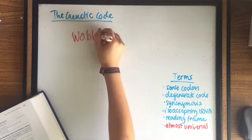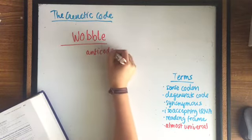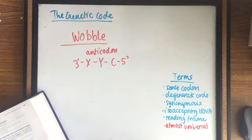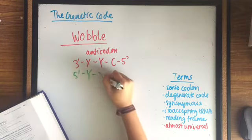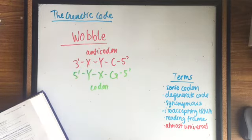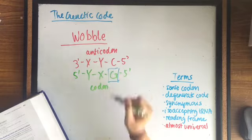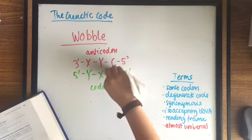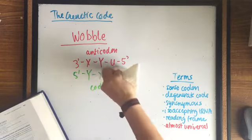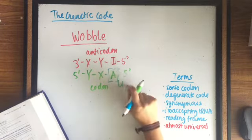The wobble hypothesis proposed by Crick says that some non-standard pairing of bases could take place at the third position of the codon which allows different codons to specify the same amino acids. The wobble rule indicates which base in the third position of the mRNA codon can pair with bases at the first position of the anticodon of the tRNA. Be careful with this.